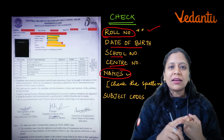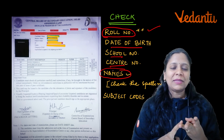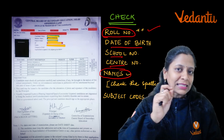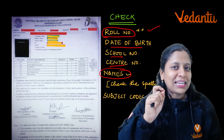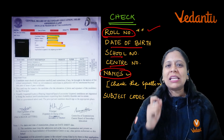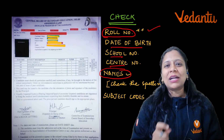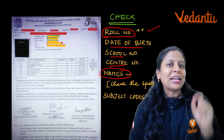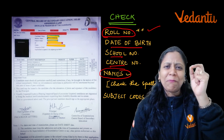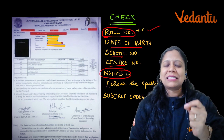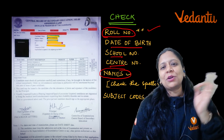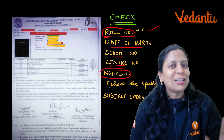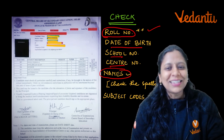Next, check your name, mother's name, and father's name — verify the spellings carefully. Any small mistake on your 10th class certificate will stay with you lifelong, so get it corrected now itself. If there is any mistake, immediately inform your teacher, school, or principal.